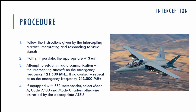What is the procedure in case you are intercepted? First, you need to respond and follow the instructions of the intercepting aircraft. Notify if possible the appropriate ATS unit, and establish radio communication with the intercepting aircraft on the emergency frequency 121.5 MHz. If there is no contact, repeat the radio communication on the emergency frequency 243.0 MHz.